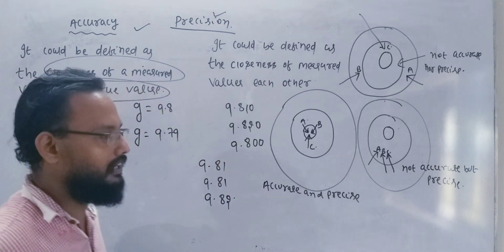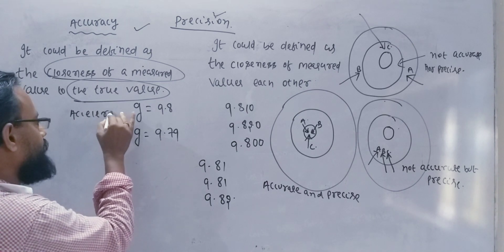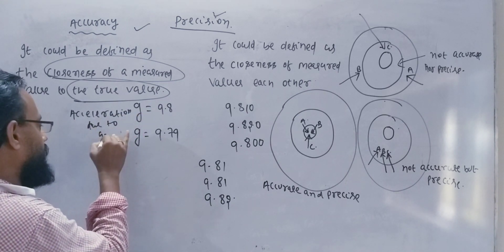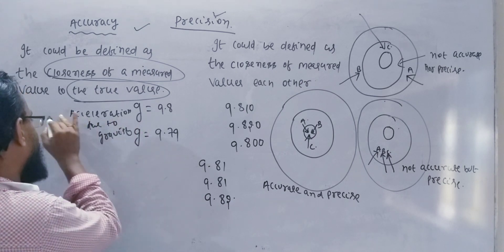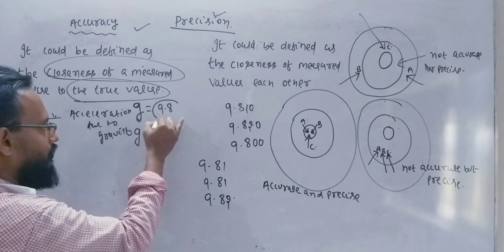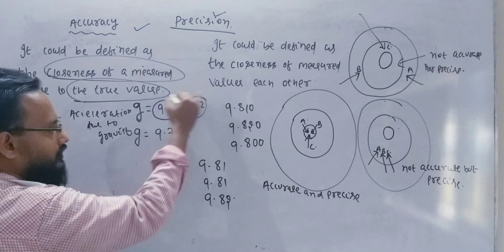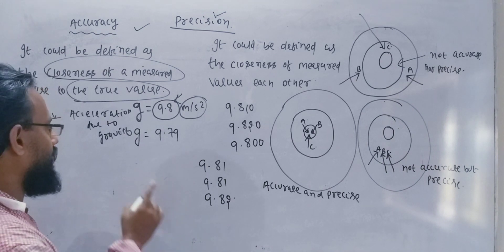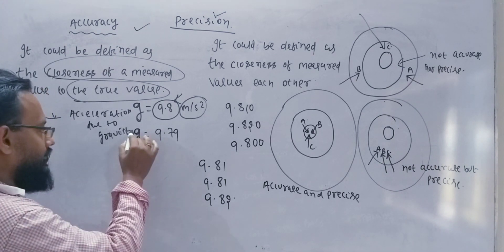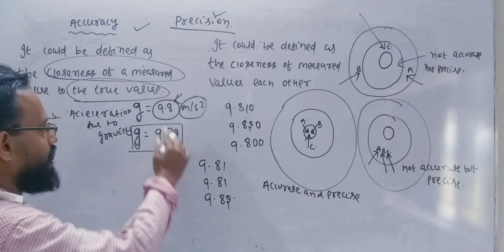Let's try an example using acceleration due to gravity. The accepted true value of acceleration due to gravity is 9.8 meters per second squared. When a student performs the experiment and gets 9.7, we look at that column — is that value accurate?